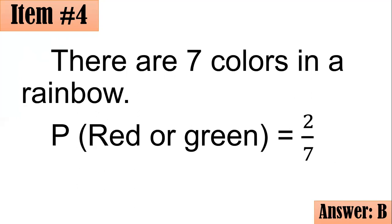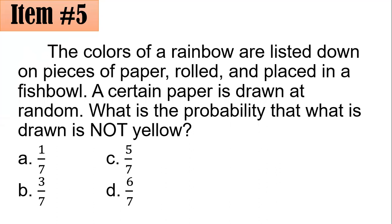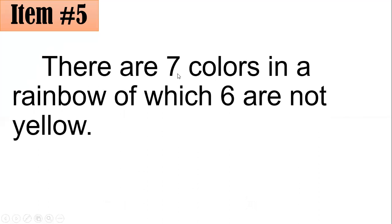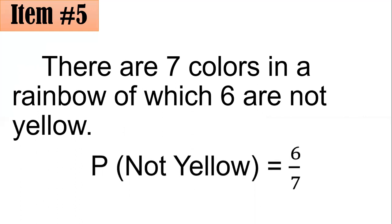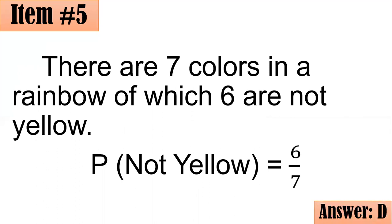Number 5. Same conditions as number 4. You are asked: what is the probability that what is drawn is not yellow? Is it 1/7, 3/7, 5/7, or 6/7? We are interested in finding the probability of not yellow. There are 7 colors in a rainbow, but 6 of them are not yellow: red, orange, green, blue, indigo, and violet. Thus, the probability of getting a color which is not yellow is 6 out of 7, or 6/7. Letter D.